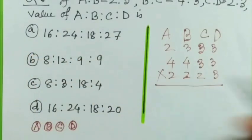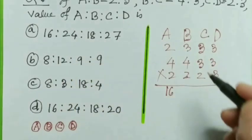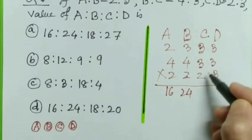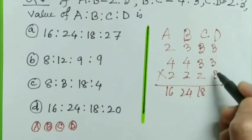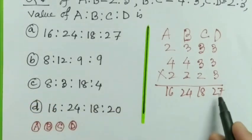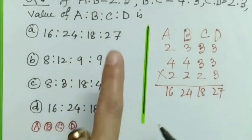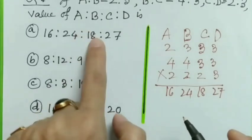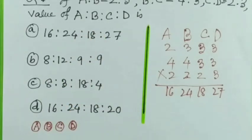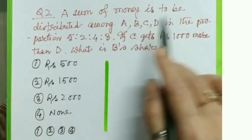Now we multiply the numbers in each column: 4×2=8, 8×2=16; 4×3=12, 12×2=24; 3×3=9, 9×2=18; 3×3=9, 9×3=27. So the answer is 16:24:18:27. Looking at the options, option A is the correct answer.